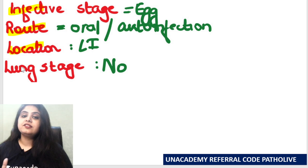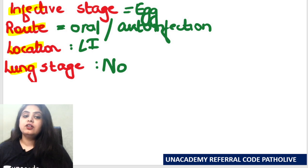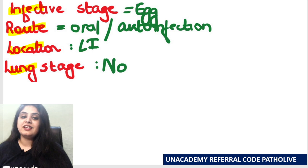To summarize: the infective stage is the egg. The route is oral or auto infection. Location is the large intestine — similar to yesterday's organism. And there is no pulmonary stage.